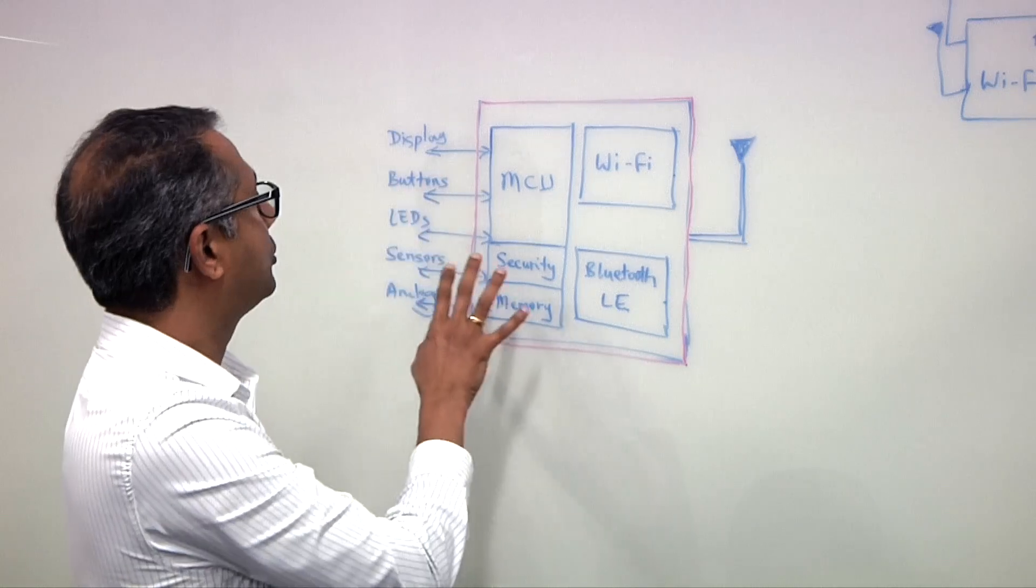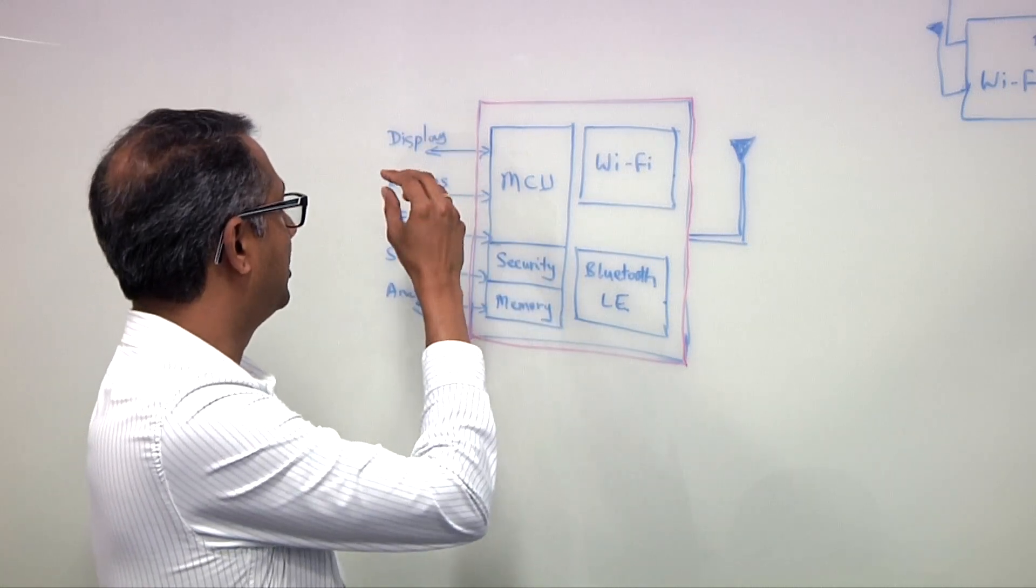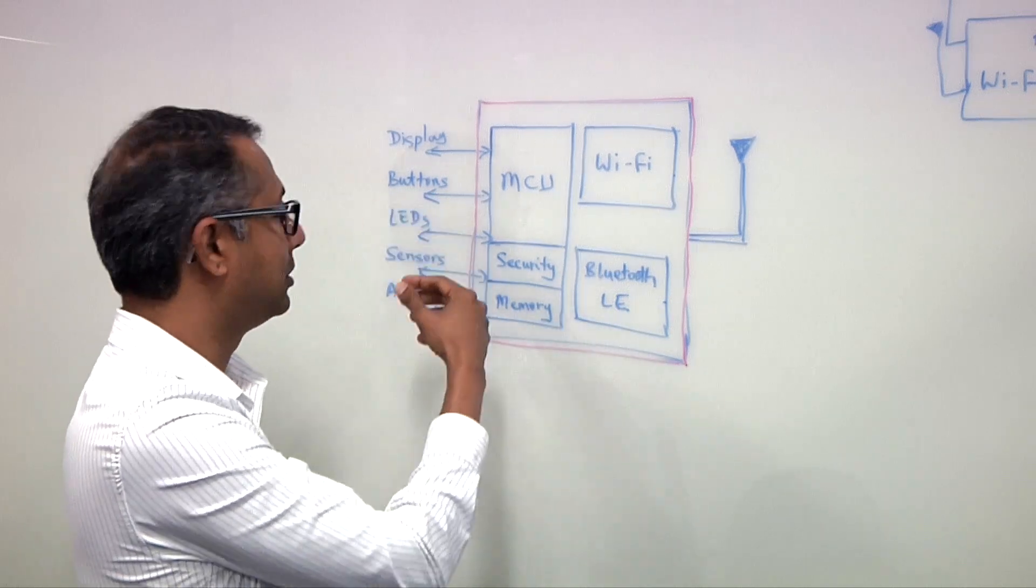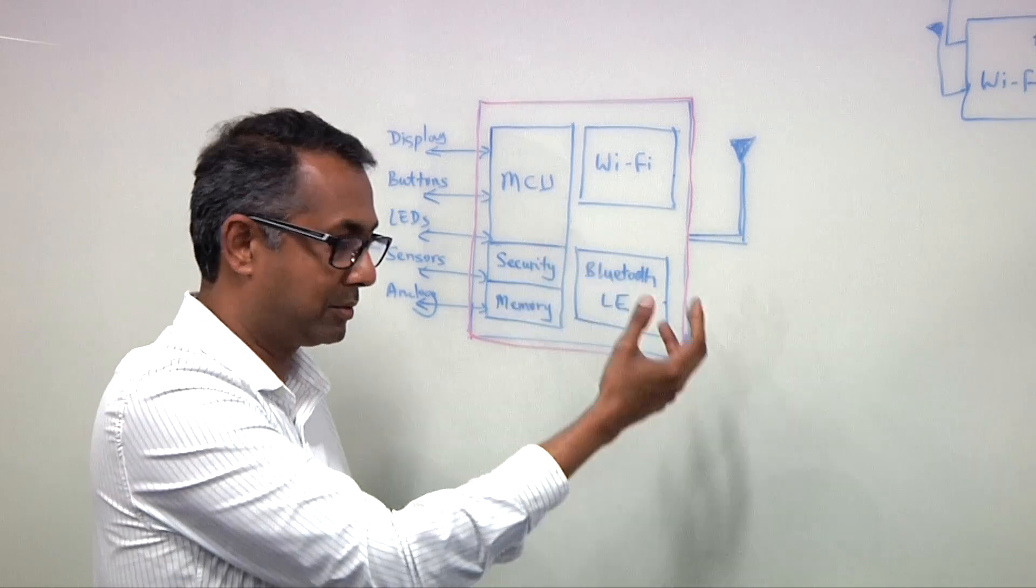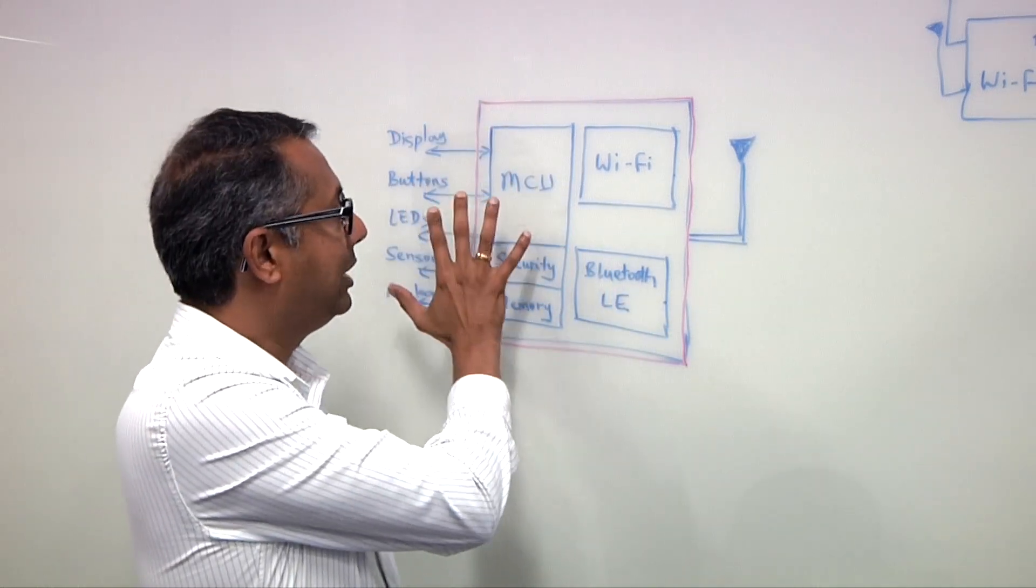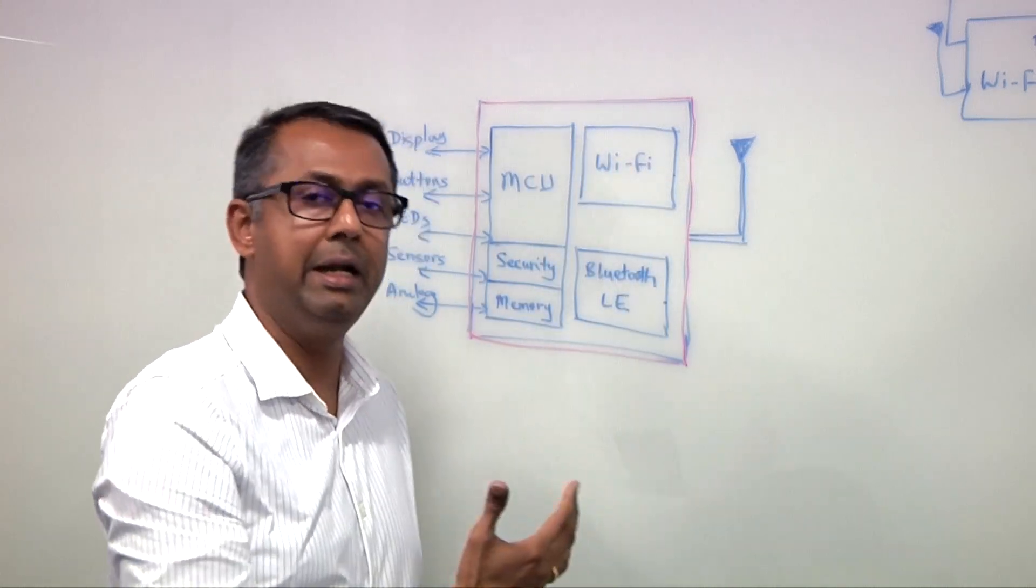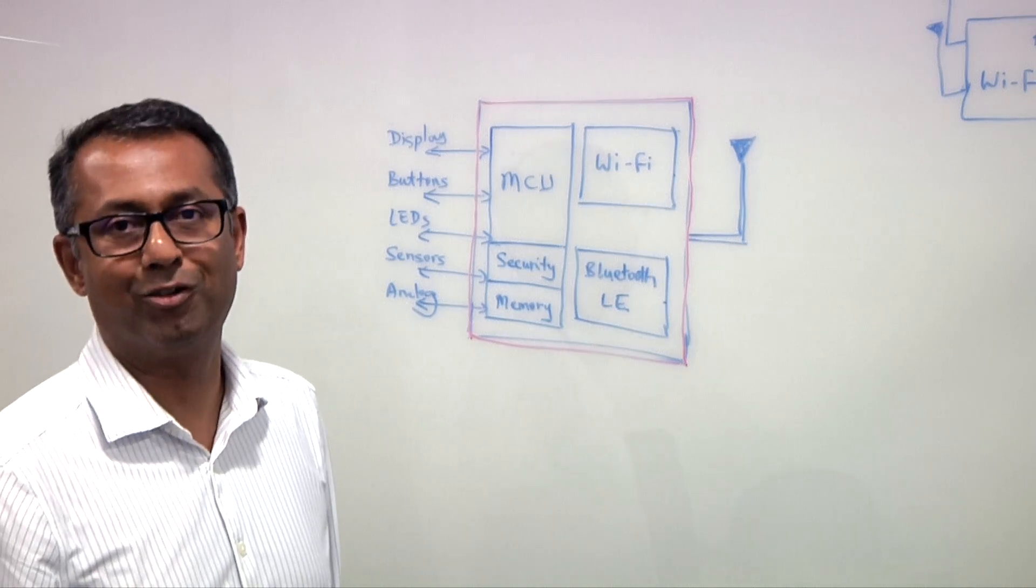But all the other parts of the system, like whether it's got a display or some button, some kind of an interface to the user, LEDs, sensors, and analog, those are largely the same because the devices themselves, whether it's a printer controller or a smoke detector and so on, is largely still the same. The changes come to the fact that they're getting connected, and that's why you need this new breed of microcontrollers, which we call connected microcontrollers.